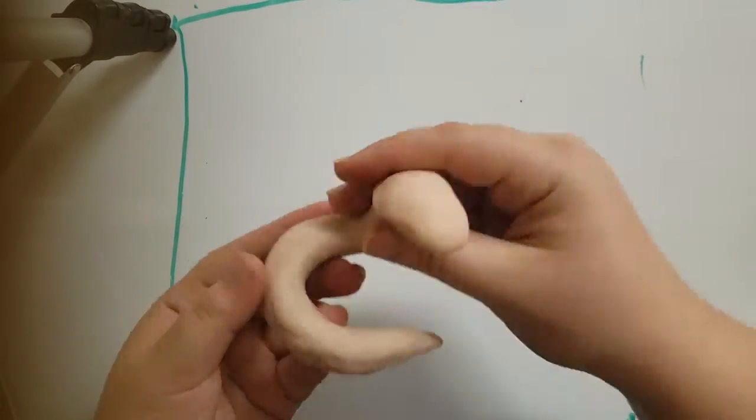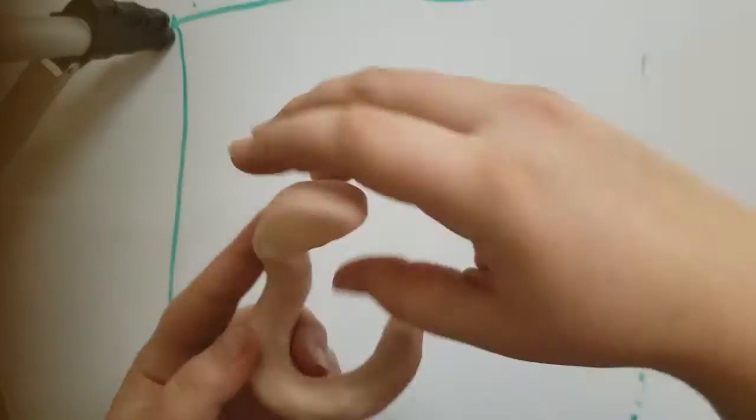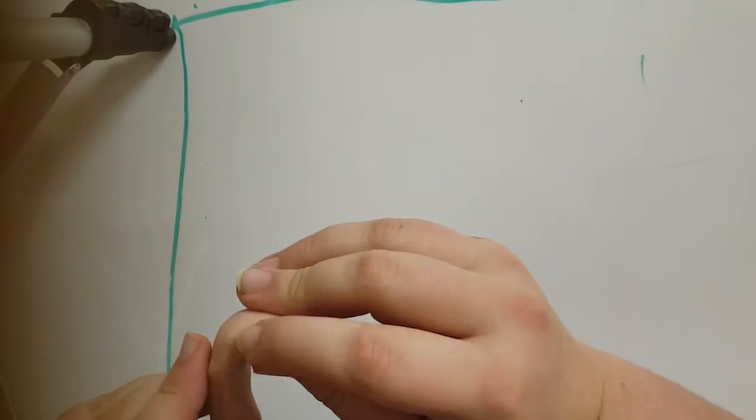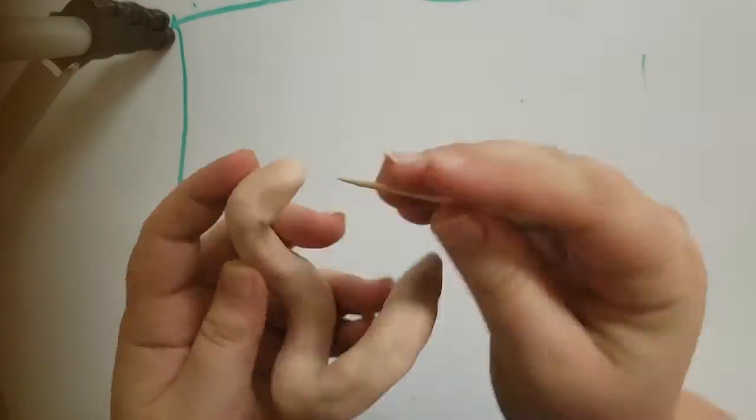Smooth out the rough surface how you want the project to end up. Start detailing in the area you will hold the least, so the details won't get messed up. In this case, it's the head.